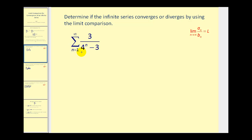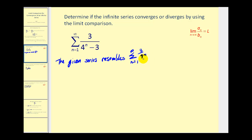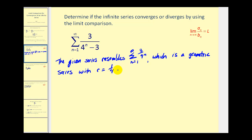This series should remind us of the infinite series of three divided by four to the power of n. Notice as n increases, we multiply the denominator by additional factors of four, which is the same as multiplying by one-fourth each time. So this is a geometric series where r equals one-fourth, which is less than one, and therefore converges by the geometric series test.